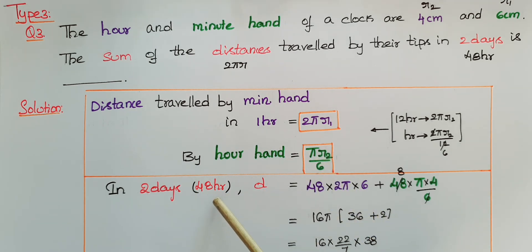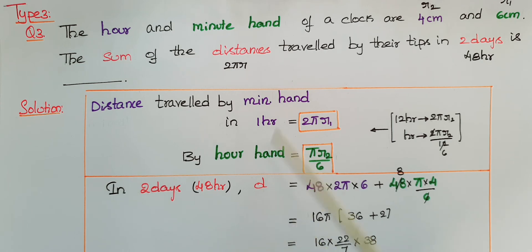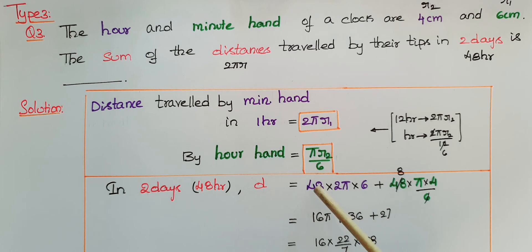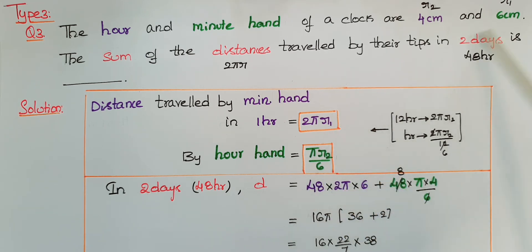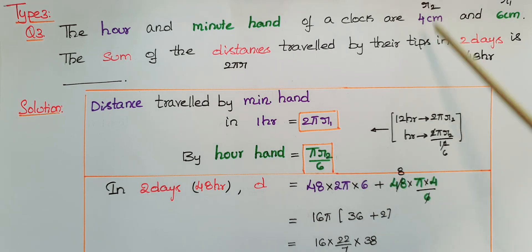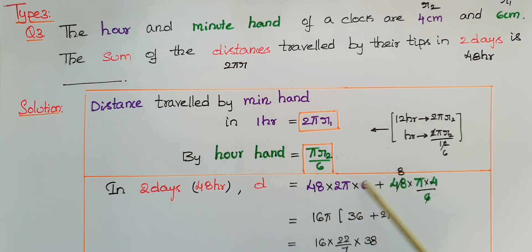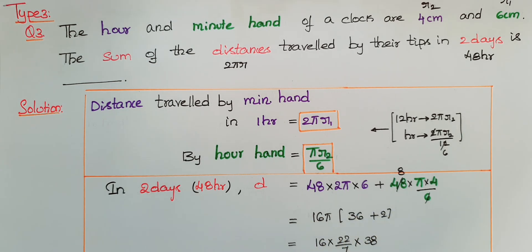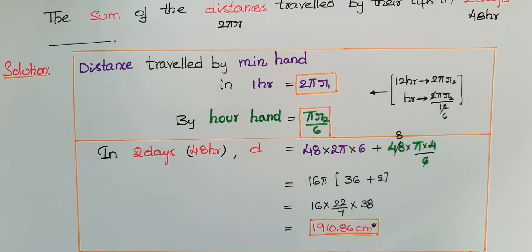In two days, that is 48 hours, the total distance traveled by both hands is: for the minute hand, 48 × 2π × 6 (centimeters); for the hour hand, 48 × π × 4/6. Simplifying: 6 × 8 = 48. Then 16π is common, giving 16π × (36 + 2), which equals approximately 1910.86 centimeters.